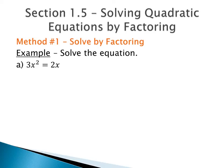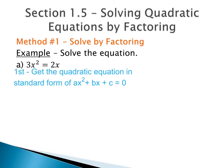In order to solve a quadratic equation by factoring, first we need to get the equation into standard form, which is ax squared plus bx plus c equals zero. So in this case, we have 3x squared equals 2x. It is not in standard form because we need it equal to zero. So I'm going to move the 2x over so that we have 3x squared minus 2x equals zero.